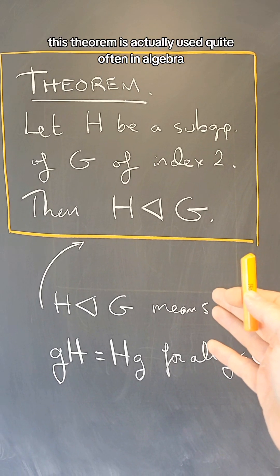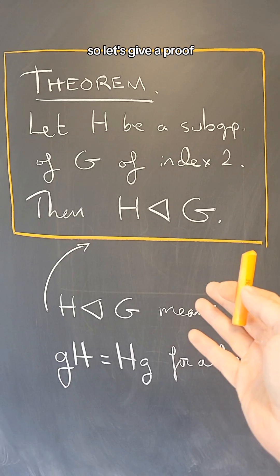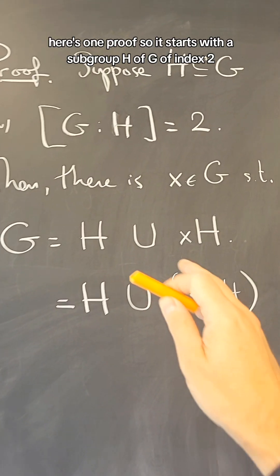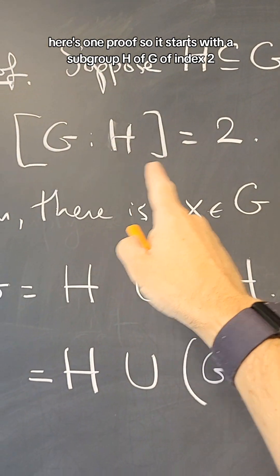This theorem is actually used quite often in algebra, so let's give a proof. Here is one proof. So it starts with a subgroup H of G of index 2.